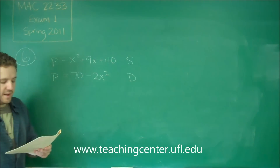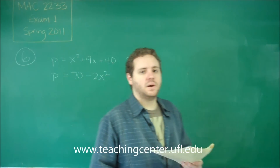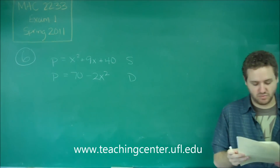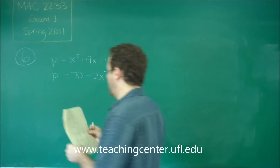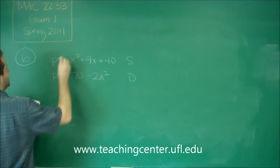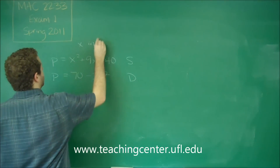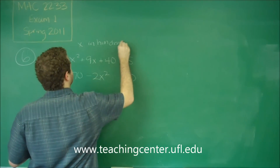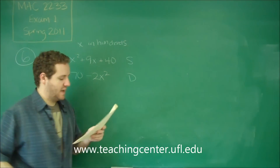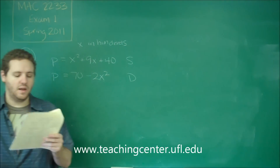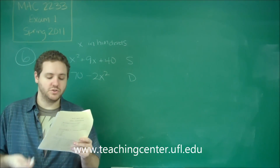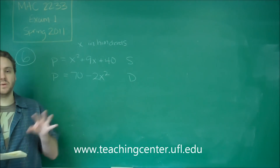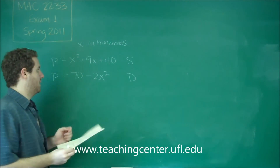To find the equilibrium quantity and price, that's when supply and demand are equal, so that's what we're going to be doing here. Remember that x is in hundreds — that's important because your answer choices have quantities like 200, 300, 500, which correspond to x equals 2, 3, 5. So don't get thrown off by that.